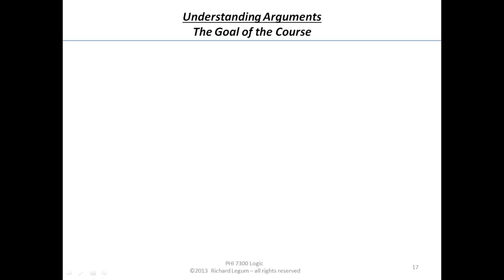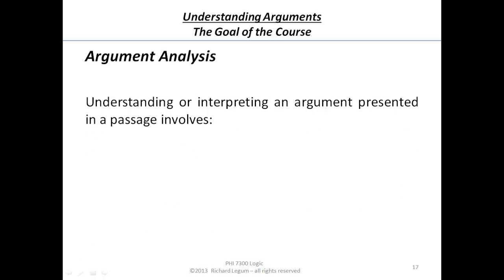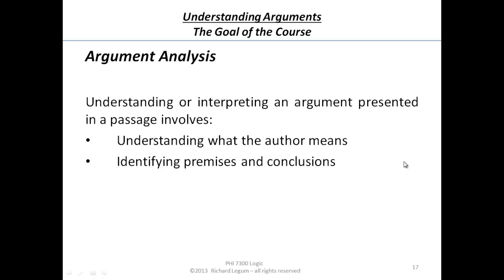The goal of the course is to be able to do what we're going to call argument analysis. What does that amount to? Well, part of it is understanding or interpreting an argument presented in a passage — this involves trying to figure out what the author means, understanding exactly what the author means. Identifying the premises and the conclusion — I usually try to say first identify the conclusion, the point of the argument, and then try to figure out what the premises are. Because these things don't come numbered to us.